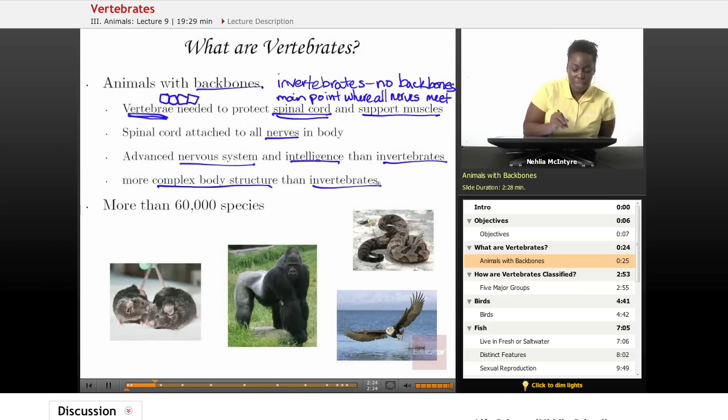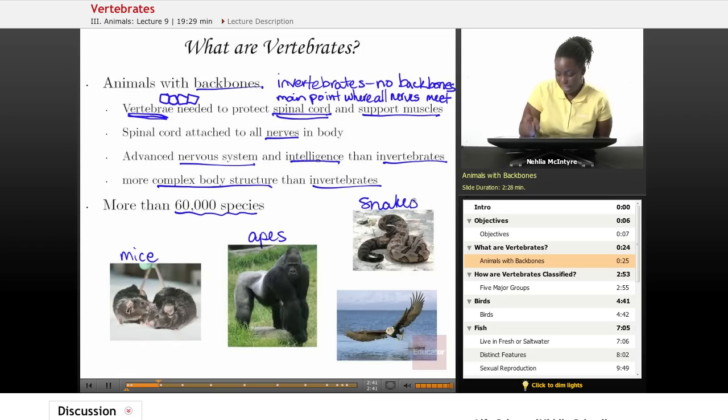There's more than 60,000 different types of species of vertebrates that have been identified and named. Some examples would be mice, apes, snakes, eagles, and I hope you thought of yourself because humans are vertebrates.